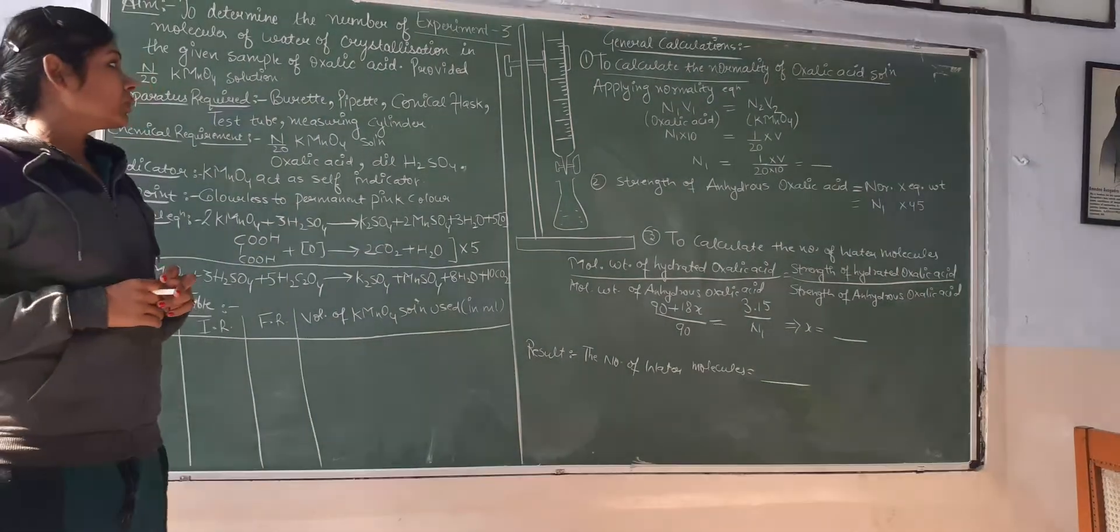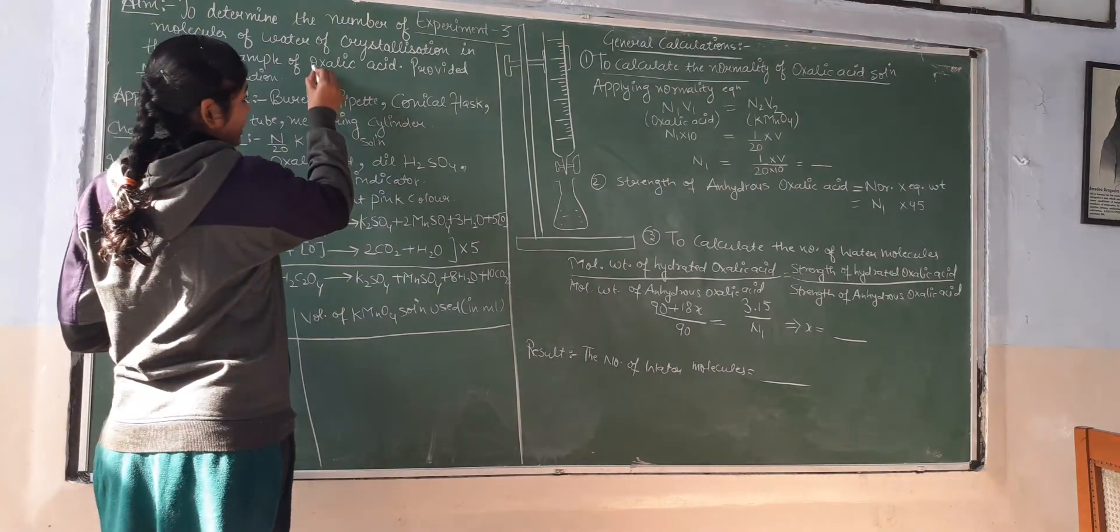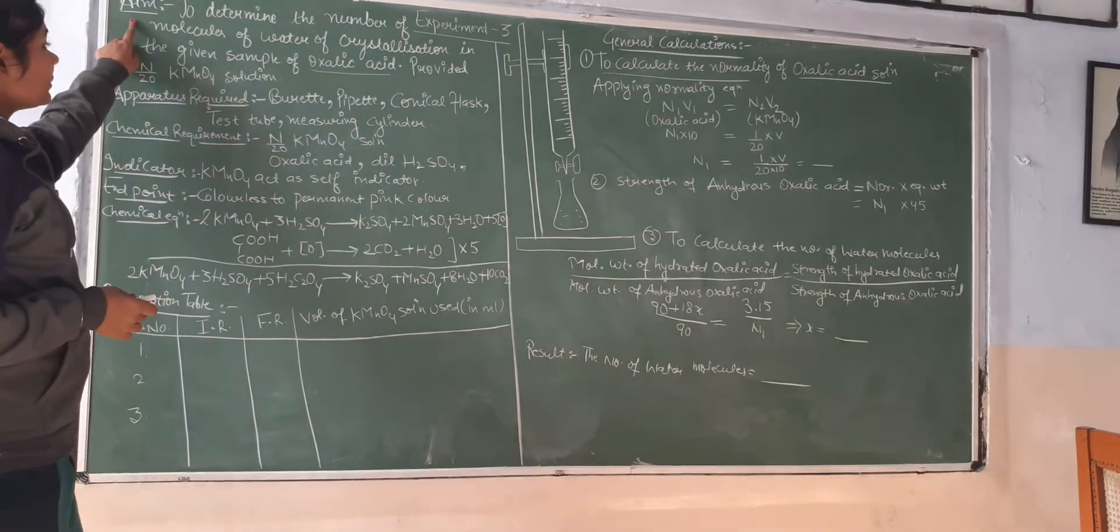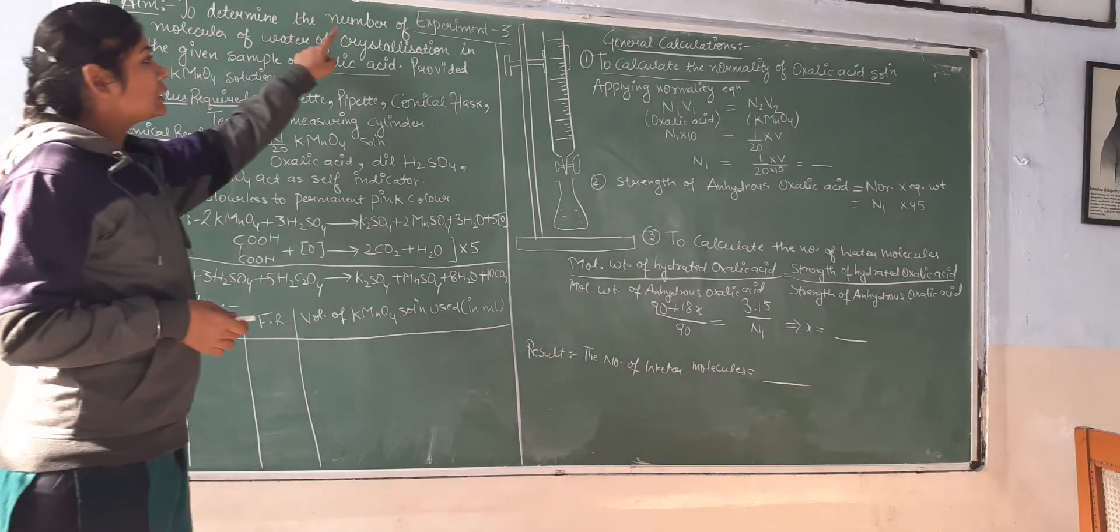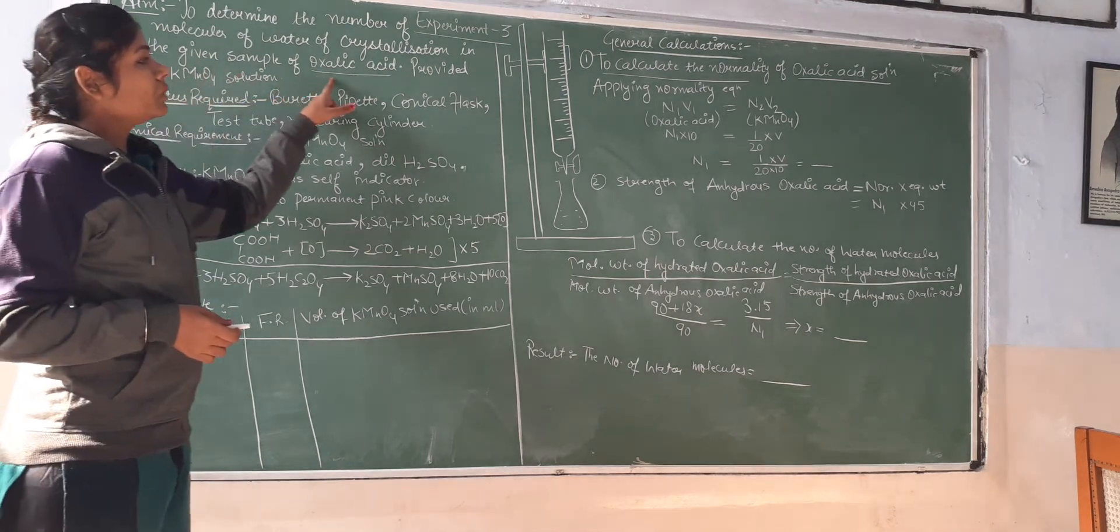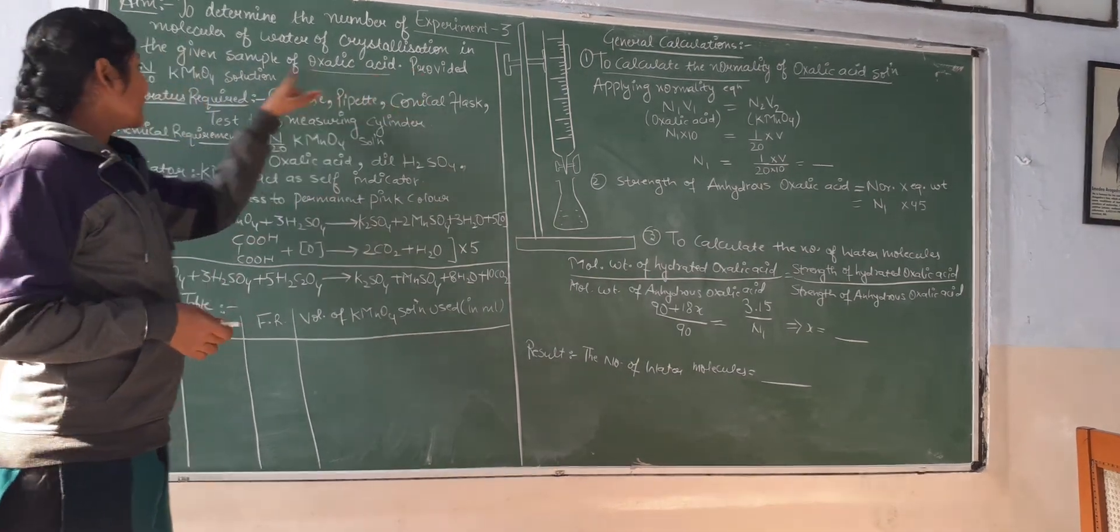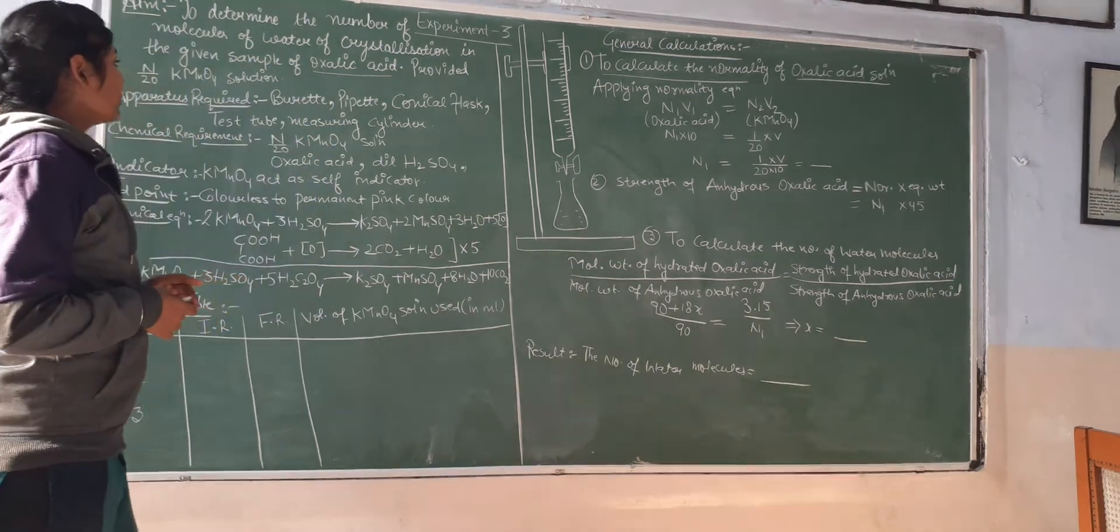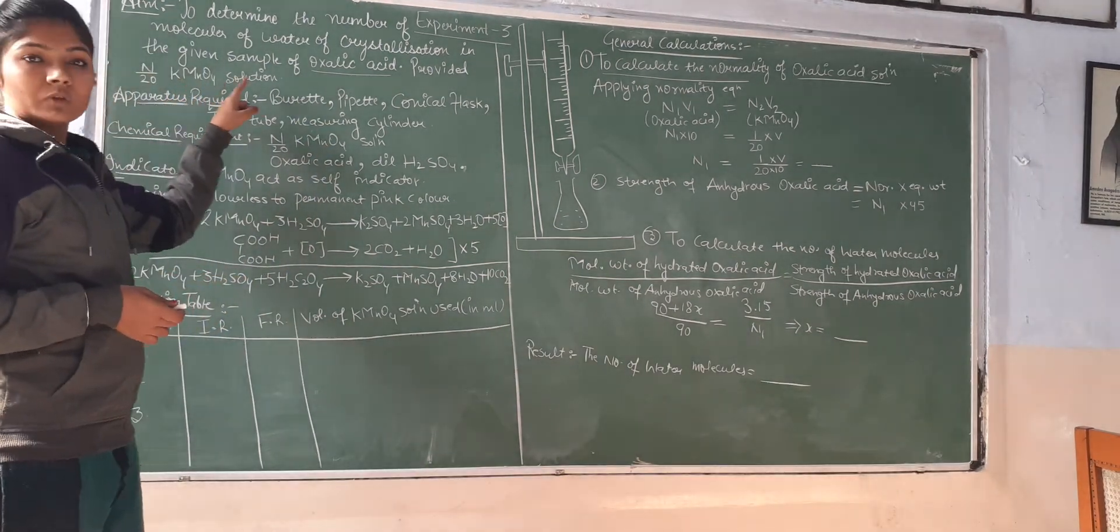Here we will calculate the number of water molecules in oxalic acid. Our aim is to determine the number of molecules of water of crystallization in the given sample of oxalic acid, using N by 20 KMnO4 solution.